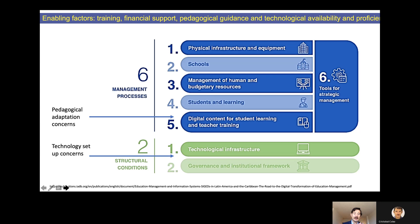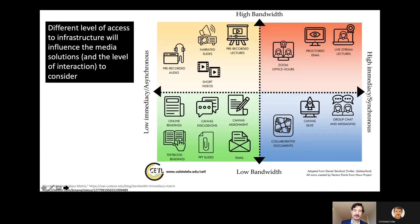Many focus on two key components: the technology and the pedagogical adaptations, which are essential. But there are other key enabling factors, like the appropriate training teachers will receive, the financial support that some communities will require, pedagogical guidance, technological availability, and technological proficiency. All of these components are going to be essential to make blended learning effective.